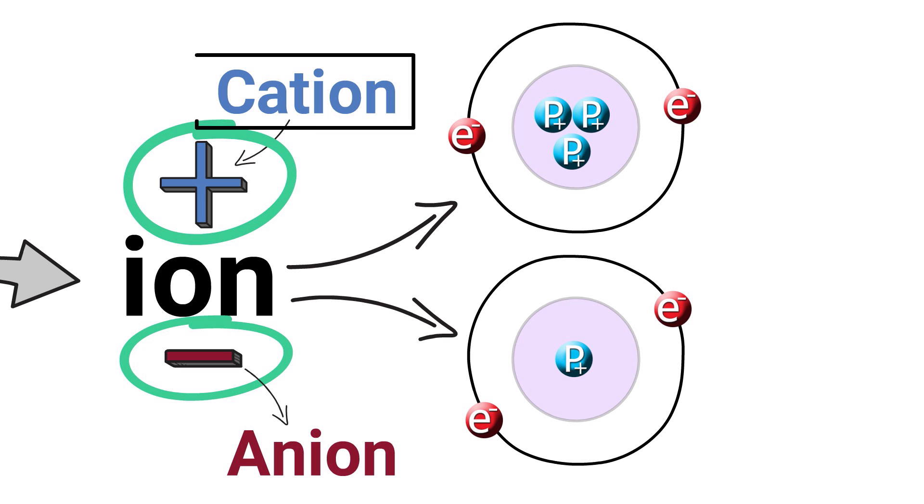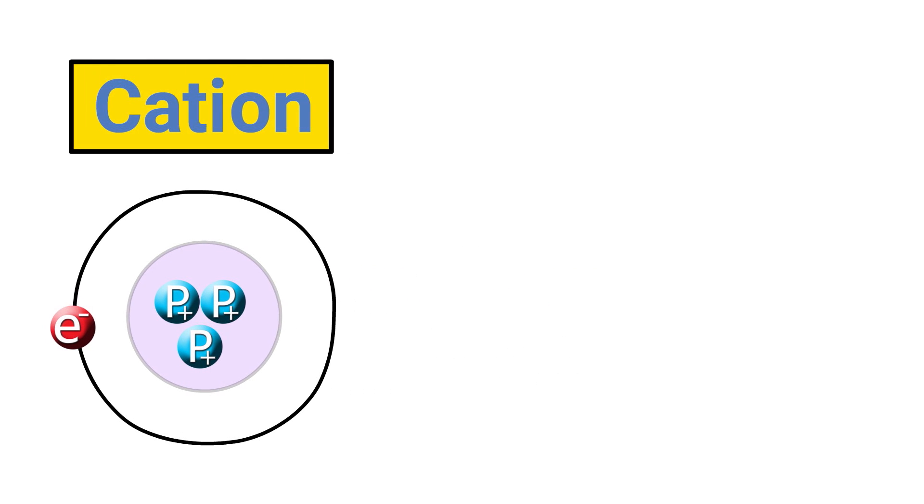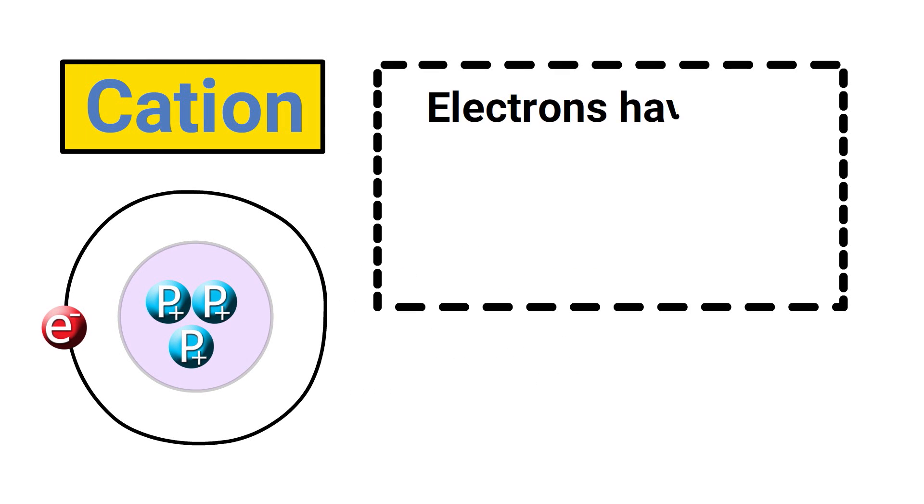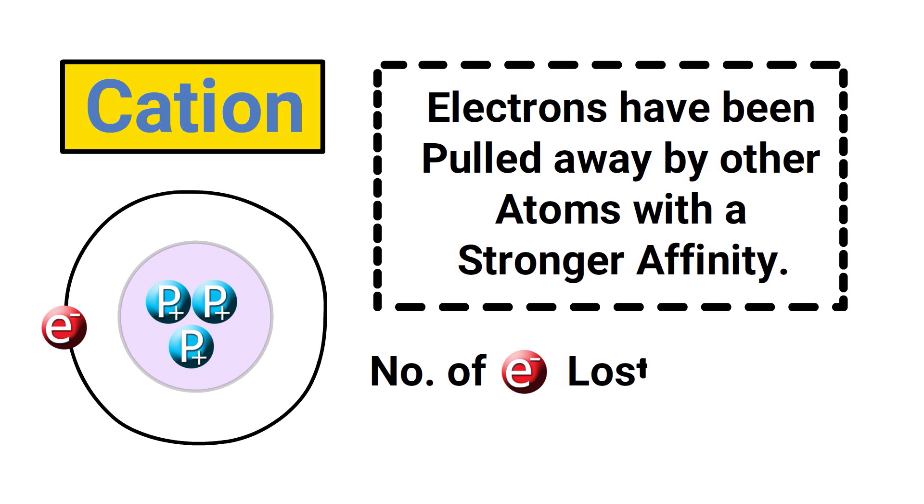This is the ion we're focusing on in this video. In order for a cation to form, one or more electrons must be lost, and for this to happen it typically means they have been pulled away by other atoms with a stronger affinity. The number of electrons lost indicates the charge of the ion.